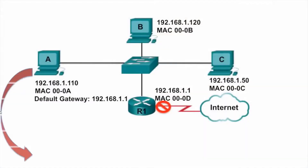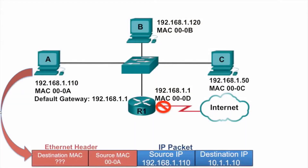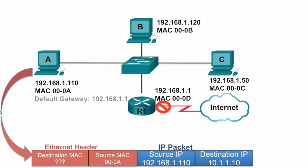In this video, PCA has an IP packet with source IP address 192.168.1.10 and destination IP address 10.1.1.10, which is an IP address on a remote network. So the destination MAC address will be that of its default gateway 192.168.1.1, the router R1 in this case.